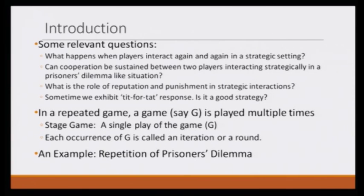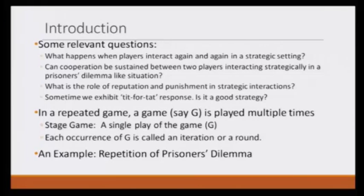Most importantly, if you remember the prisoner's dilemma game, the players do not cooperate with each other. The relevant question here would be: can cooperation be sustained between two players interacting strategically in a prisoner's dilemma-like situation? What is the role of reputation and punishment in any strategic consideration? Reputation does not work when players are interacting only once, but if players are interacting again and again, then reputation may play a very important role. We also hear of strategies like tit-for-tat — do what the other has done to you. Is it a good strategy? We will try to analyze that.